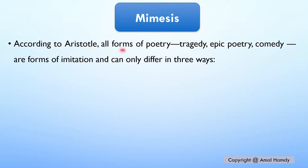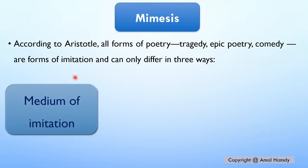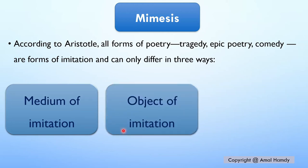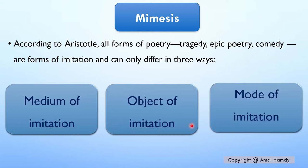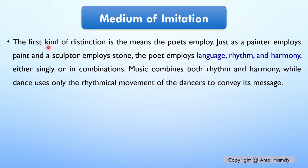According to Aristotle, all forms of poetry — whether tragedy, epic poetry, or comedy — are forms of imitation and can only differ in three ways: number one, the medium of imitation, or the means through which the artist imitates; number two, the object of imitation, the thing being imitated; and number three, the mode of imitation, or the way the artist imitates the object.